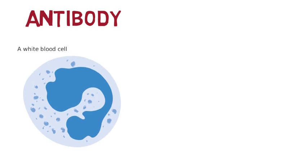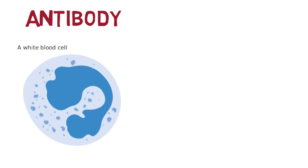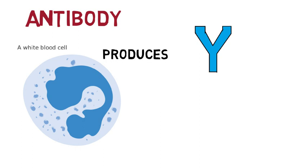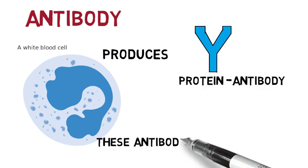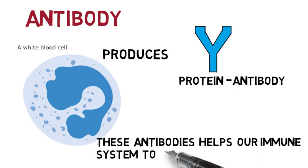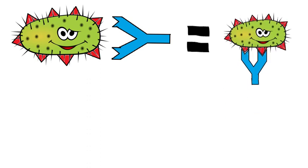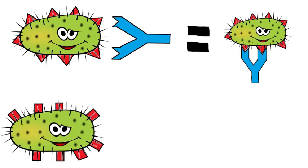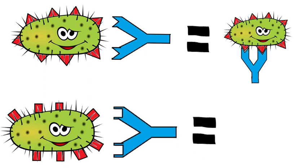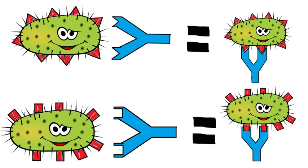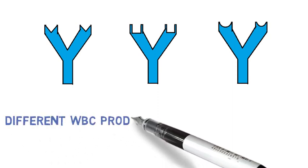Different pathogens have antigens with different shapes. White blood cells present in our blood produce a protein called antibody. These antibodies help our immune system to fight against infections. The antibodies which are specific to different shapes of antigen are different, and therefore our WBC produces different antibodies.